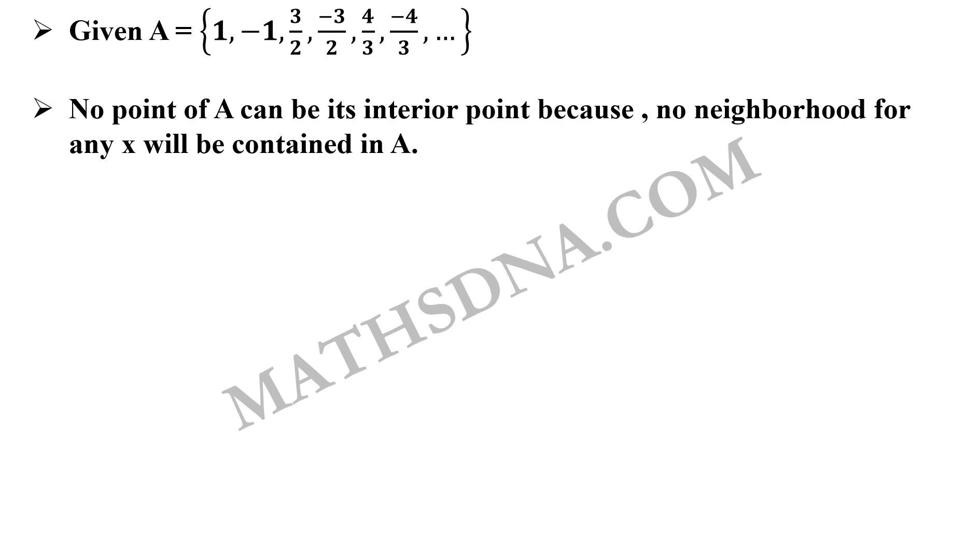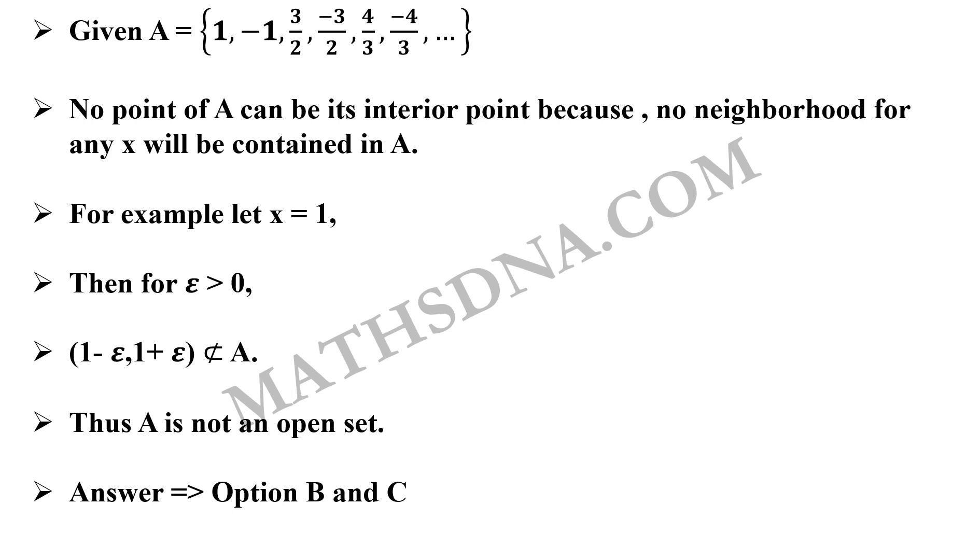Now from here directly we can say that if it is closed, it cannot be open because there are only 2 sets, empty set and the real line itself which is open as well as closed. But we will check whether the set is open set or not using interior points definition. No point can be interior point. Why? Because no neighborhood for any x will be contained in A. For example, let us take x equals to 1. No matter how small epsilon you take that is greater than 0, the whole open interval (1 - epsilon, 1 + epsilon) will never be contained in A completely. So, no point of A can be its interior point and so A is not an open set. The correct answers are option B and option C.